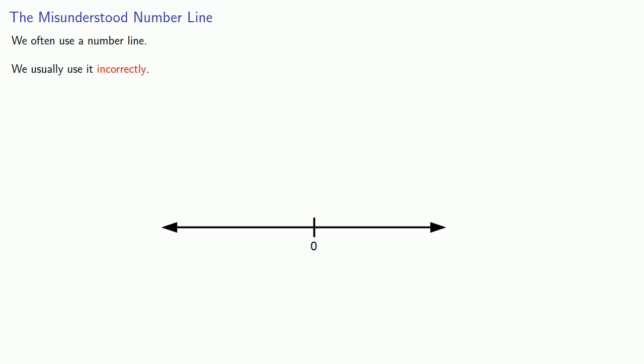The important thing to recognize is that when we mark a number on a number line, the number does not correspond to the point. The number is not the point. The number corresponds to the distance from the origin.